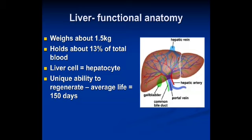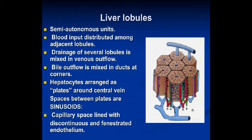It weighs around 1.5 kg and holds about 13% of total blood volume. The unit of liver cell is called the hepatocyte. In between the layers of hepatocytes are the sinusoids. The liver has a unique ability to regenerate, with an average cell life of around 150 days. The liver lobules are semi-autonomous units, with blood input distributed among adjacent lobules. Drainage of several lobules is mixed in the venous system. Bile outflow is mixed in ducts at corners. Capillary spaces are lined with discontinuous and fenestrated endothelium.